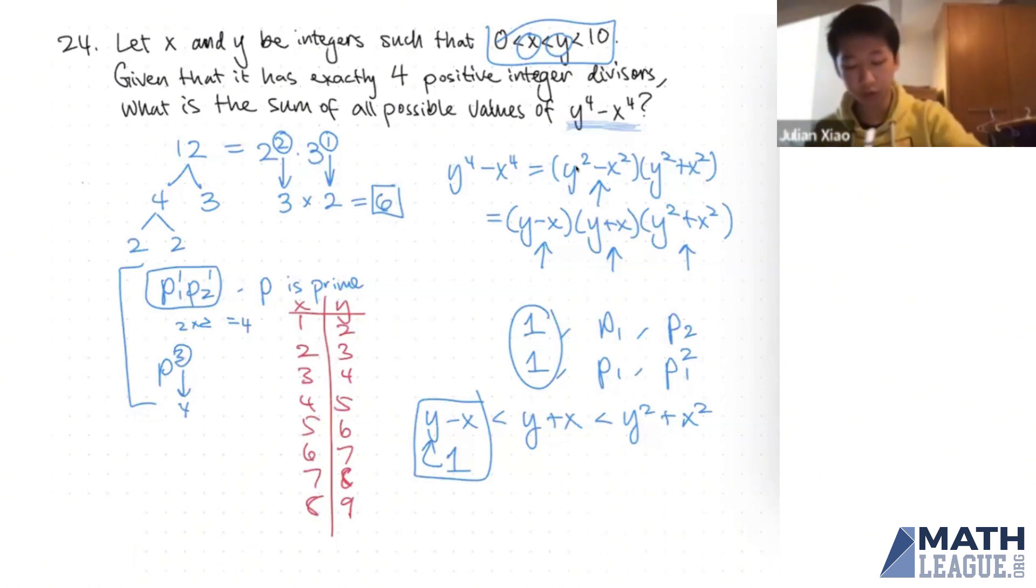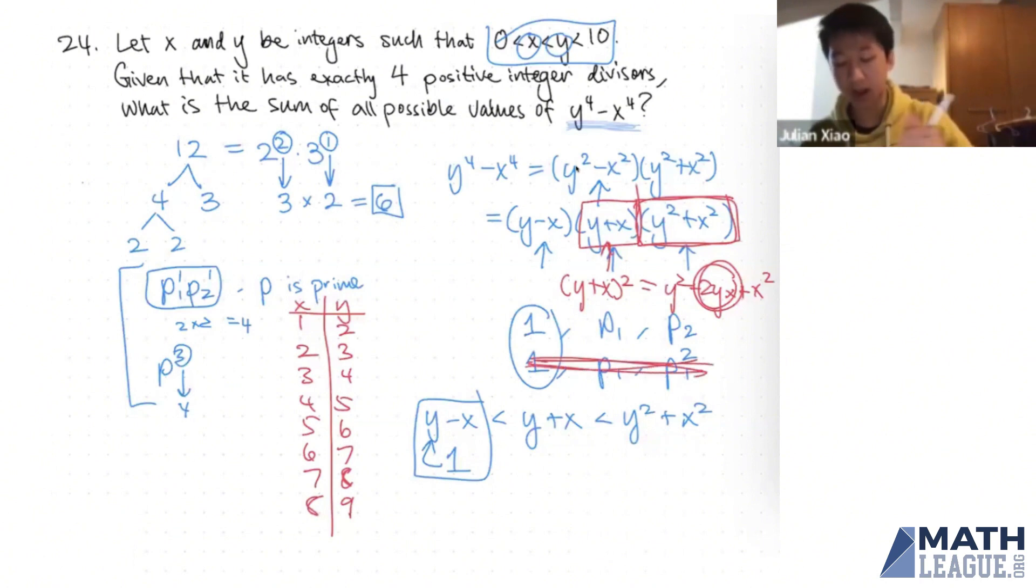So now we need to decide, should we try to get a product that looks like this or a product that looks like this? And another observation you can make is that this quantity cannot be the square of this quantity. Because the square of y plus x is equal to y squared plus 2yx plus x squared, which is definitely greater than what we have in this part right here. So because of that, I know that this option cannot happen, which leaves me with this last case. So now my goal is to find the pairs of x and y in this list where the sum y plus x is a prime and where the sum y squared plus x squared is another prime.